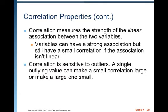Correlation measures the strength of the linear association between two quantitative variables. Variables can have a strong association but still have a small correlation if the association isn't linear. Correlation is sensitive to outliers — a single outlying value can make a small correlation large and make a large one small.